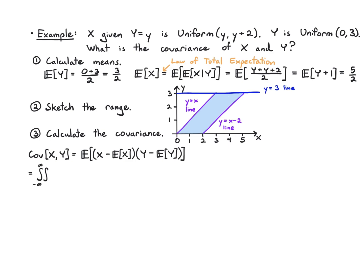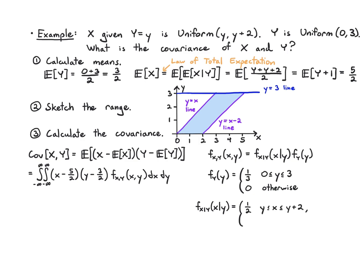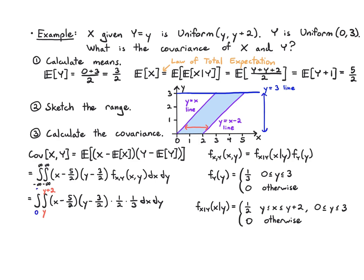We need f(x,y), which is the product of the conditional PDF and the marginal PDF. The marginal is 1/3 between 0 and 3, and 0 otherwise. The conditional PDF is 1/2 between y and y plus 2 for x, so long as y is between 0 and 3. The joint PDF is therefore 1/6 within the correct limits. We integrate x from y to y+2 and y from 0 to 3. Computing this gives three fourths.